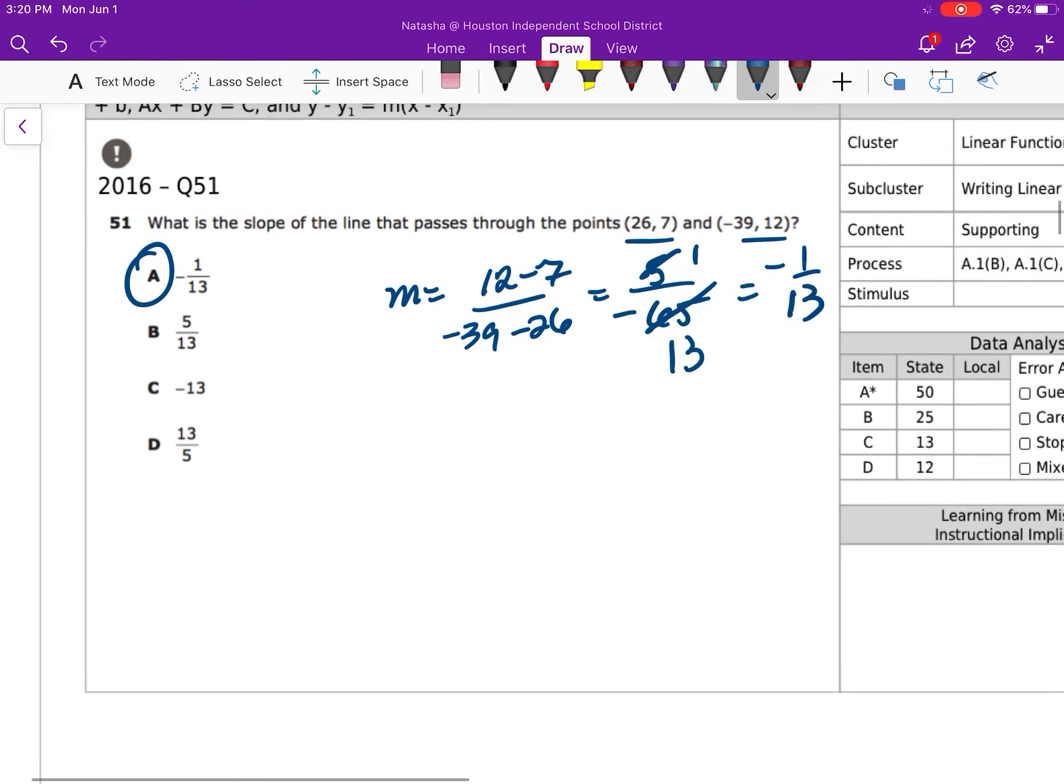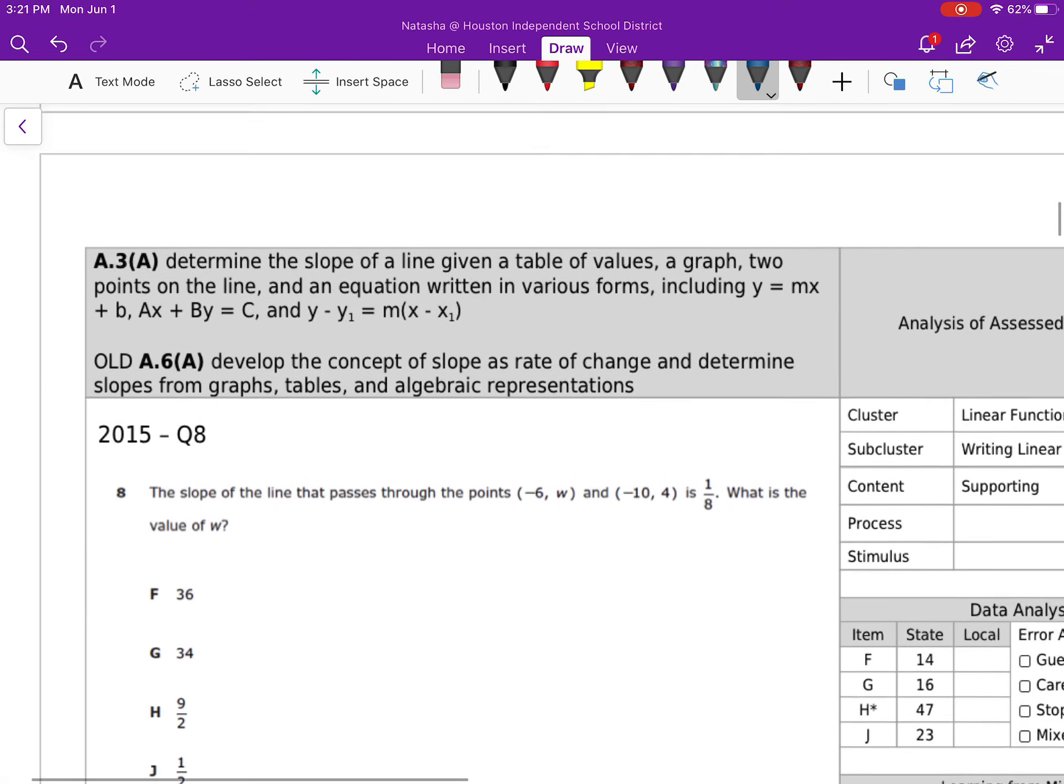Now another way you can check yourself is we can use the table. So x and y - say 39 and 12, and then 26 and 7. And think about, well, to go from 12 to 7 I need to subtract 5, to go from 39 to 26 I need to subtract 13. And that would still give you the negative 5 over 65 because it's the change in y over the change in x.